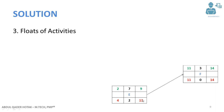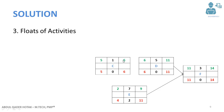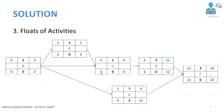For activity E, the late finish will be 11; subtracting its duration gives a late start of 4. For activity D, the late finish should also be 11 — you cannot delay it more than this, because if you delay it you will delay activity F. For activity C, the late start of activity D (which is 6) becomes the late finish of activity C; subtracting the duration gives the late start of activity C. The same approach applies to the remaining activities.